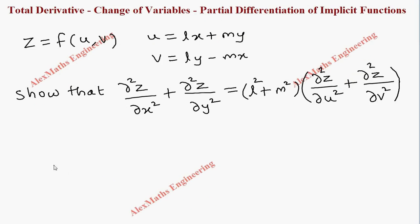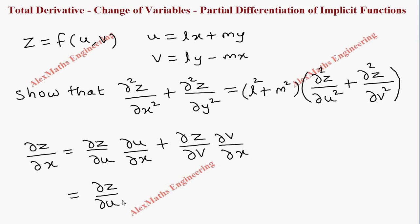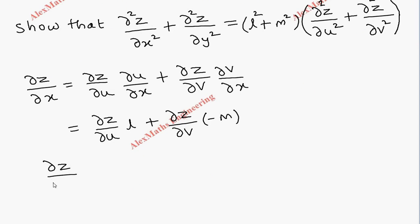Now for the first part, we are going to find ∂z/∂x. This is nothing but ∂z/∂u · ∂u/∂x plus ∂z/∂v · ∂v/∂x. The first term: ∂z/∂u as it is, and the partial differentiation of u with respect to x is l. The other term is 0 because y is constant and m is also constant. Plus ∂z/∂v, and v with respect to x is minus m. So we got ∂z/∂x equals l·∂z/∂u minus m·∂z/∂v.